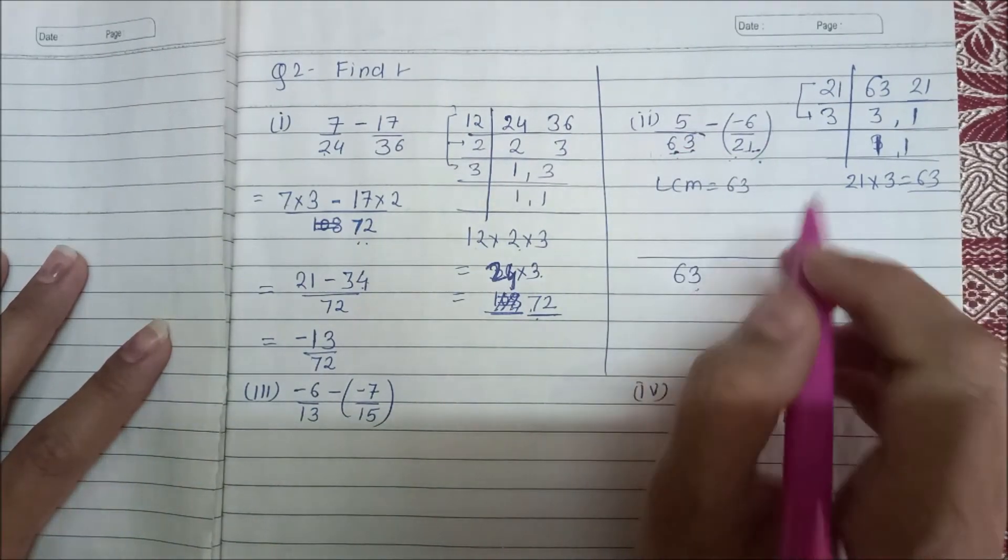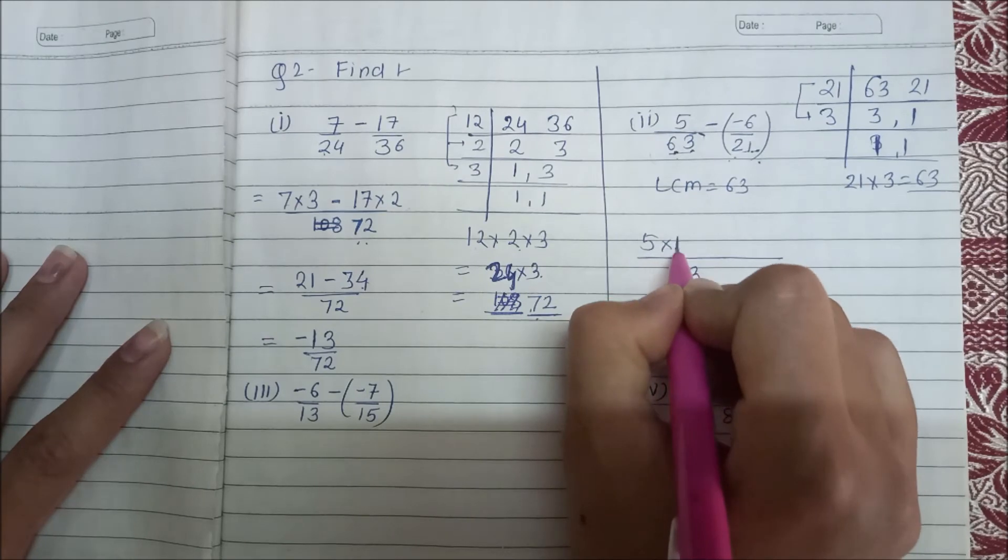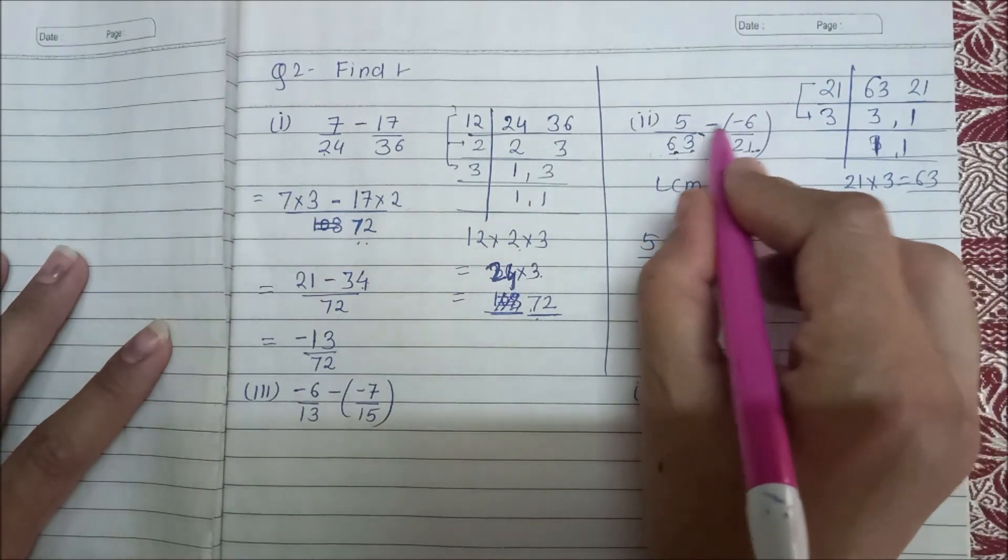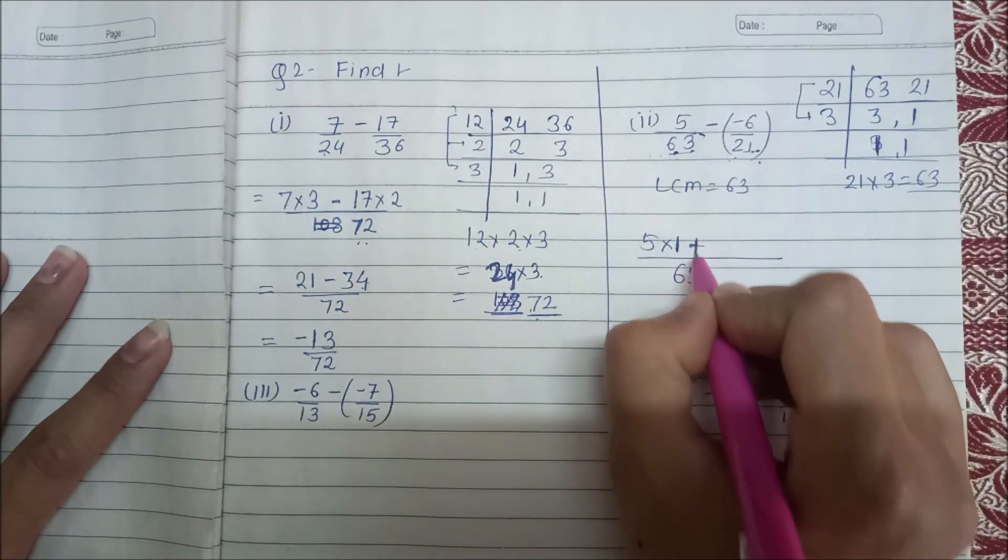So 63 divided by 1 is 63. So 5 times 1, multiply, minus. And minus minus equals plus, right?